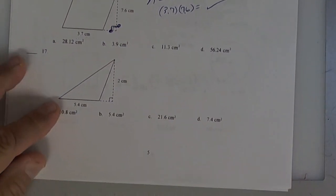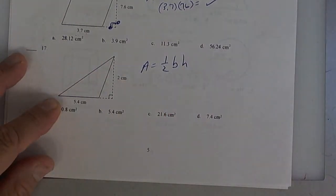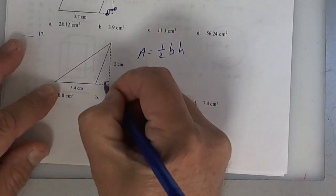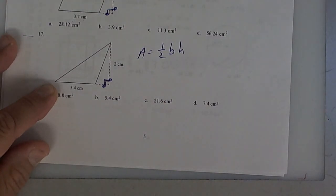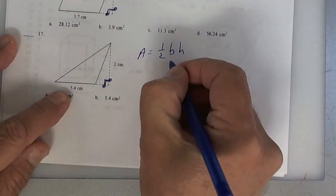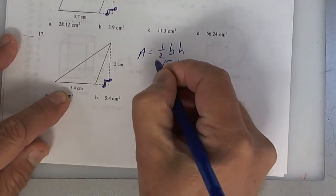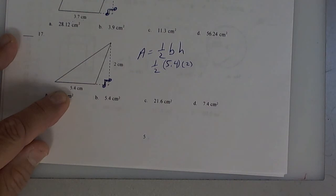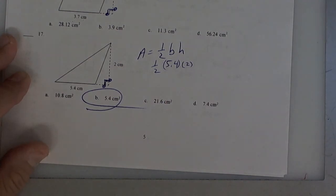The next one is a triangle. Area equals 1/2 base times height — I think that one's on the board. Color your box and put your dots. It touches 5.4 and 2. Take 5.4 times 2, press equals, and then divide by 2. I get 5.4. Is everybody clear on how to do the area of a triangle?